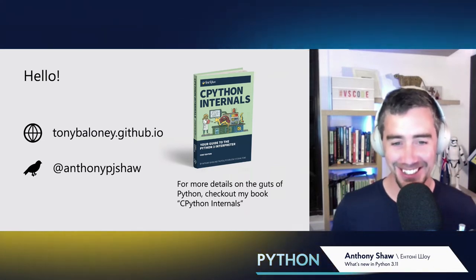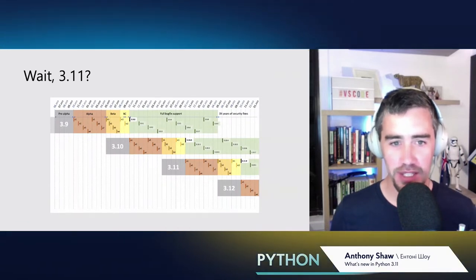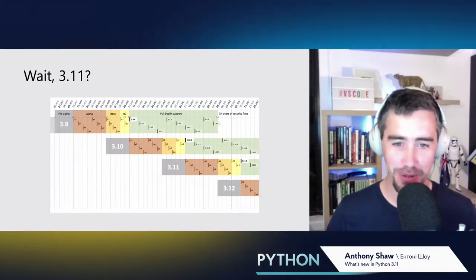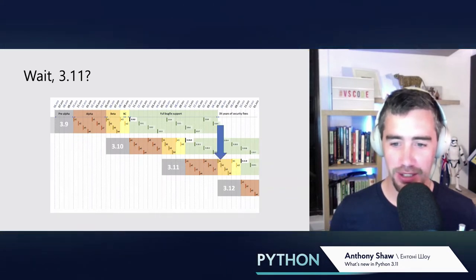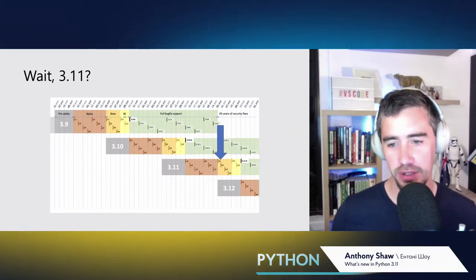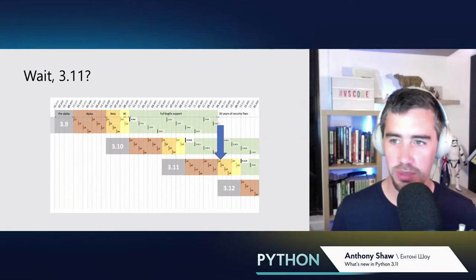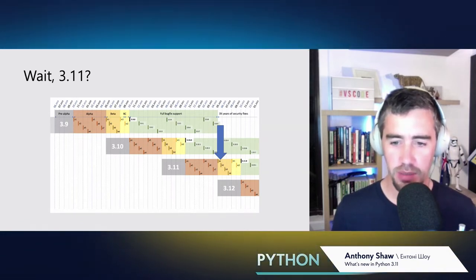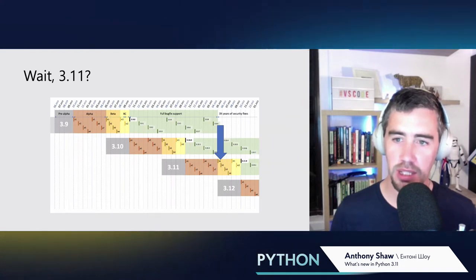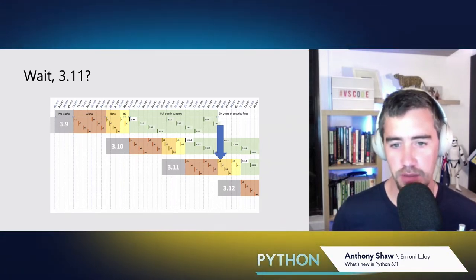We're going to talk about Python, so that's a bit of a difference. Beta one is the current beta version of 3.11. The actual release comes out in October/November time this year. I'm going to talk about what's new in 3.11 and then what's coming in 3.12, 3.13, and future versions of Python as well.